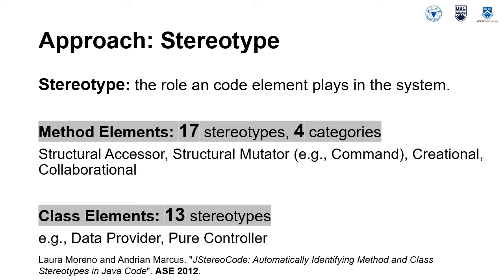We use the method and class-level stereotype taxonomy proposed in an ASE 2012 study to assign roles. The taxonomy provides 17 stereotype roles for method elements divided across four categories: structural accessor, structural mutator, creational, and collaborational. An example of a specific stereotype within these categories is a structural mutator called 'command' that indicates a method performing a complex change to an object state. The taxonomy also provides 17 stereotype roles for class elements.